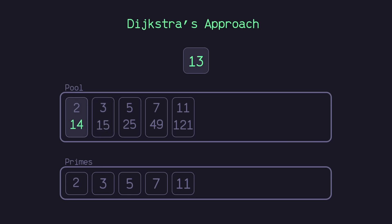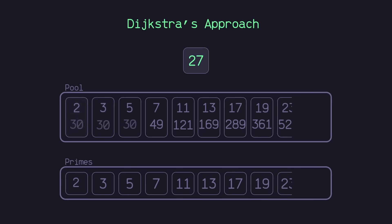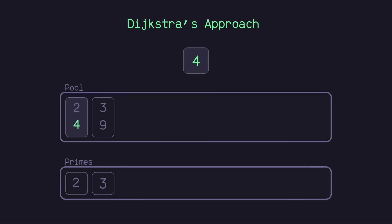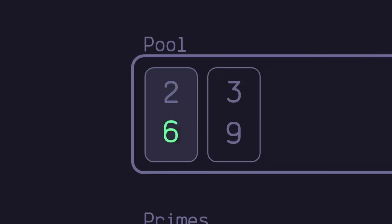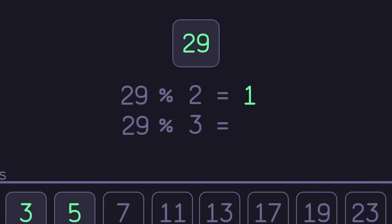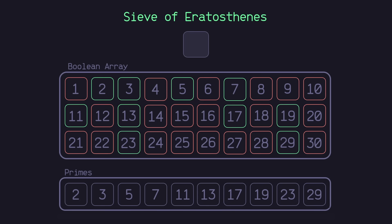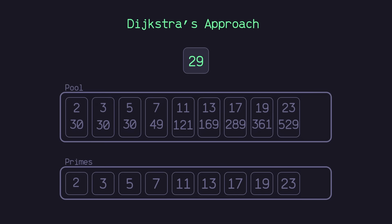This pattern continues onward. As a final example, 29 is less than our three smallest multiples, so we add it to the list of primes. This was Dijkstra's brilliant approach. On one hand, we use simple addition to track multiples of primes — not division like in trial division. And we use a smaller data structure compared to the Sieve of Eratosthenes. Instead of tracking every multiple at once, Dijkstra's method only keeps track of the multiples we need as we go.